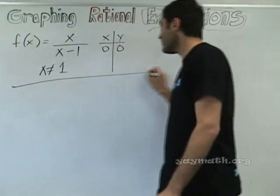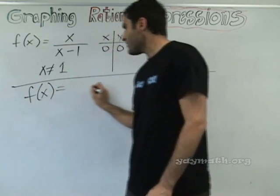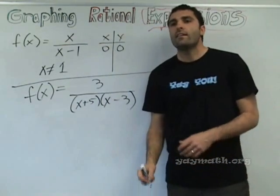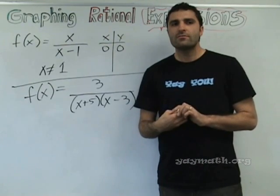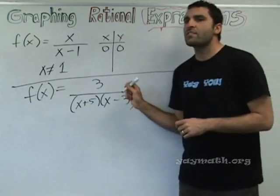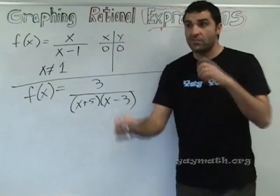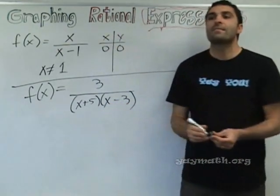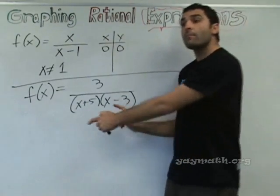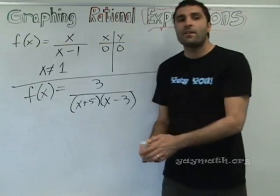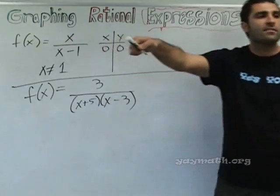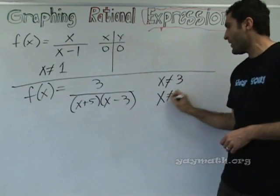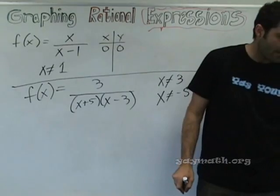Let's do the next one. X equals three over x plus five, x minus three. Are there values that x can't be? It can't be three or negative five. Right — the numbers where the denominator can't be zero. Three and negative five. So, x can't be three and x can't be negative five.